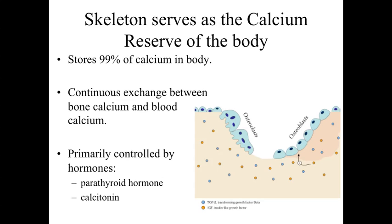Under normal circumstances, there's going to be a continuous exchange occurring between bone calcium and blood calcium, because we're going to have continual remodeling of the bone going on throughout an individual's lifetime. Looking at this diagram on the right-hand side of the slide, we have osteoclasts — they should be pink on this diagram. The osteoclasts are going to be eroding at that bone, essentially depositing their enzymes, depositing their acids, breaking down the bone. And in doing so, they're going to be liberating the calcium and the phosphate.